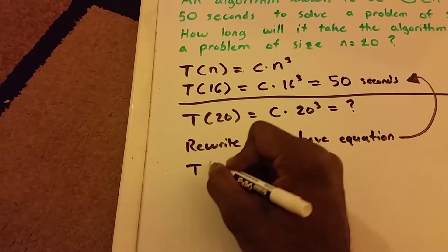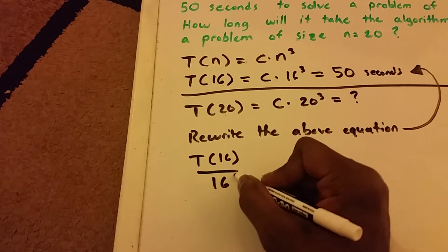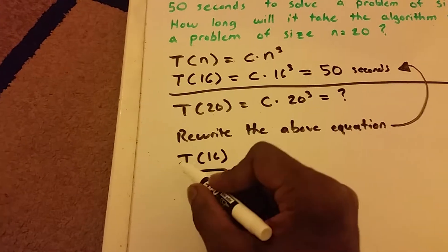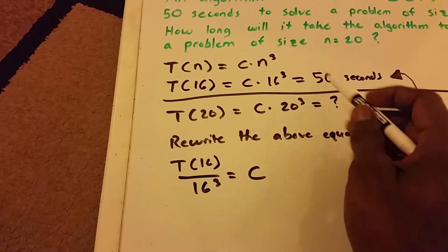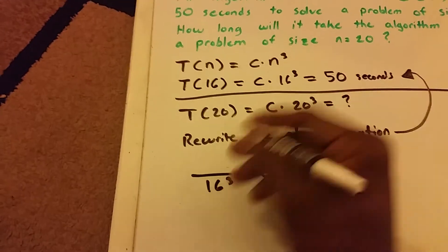So we get T of 16 divided by 16 cubed is equal to C. And remember, our T of 16 is equal to 50 seconds. So we'll write that as 50.